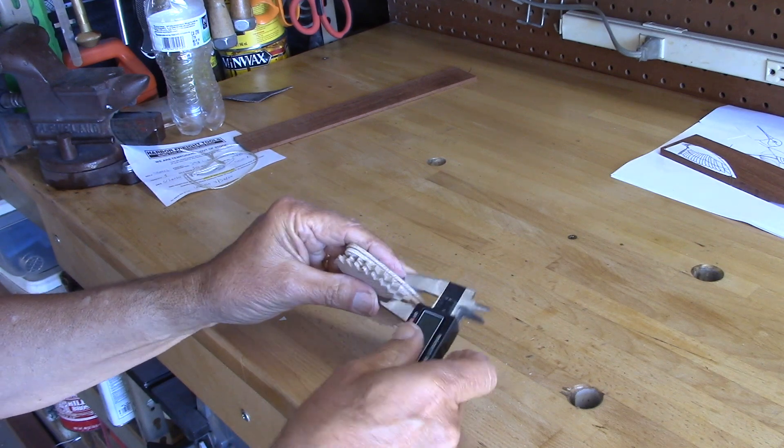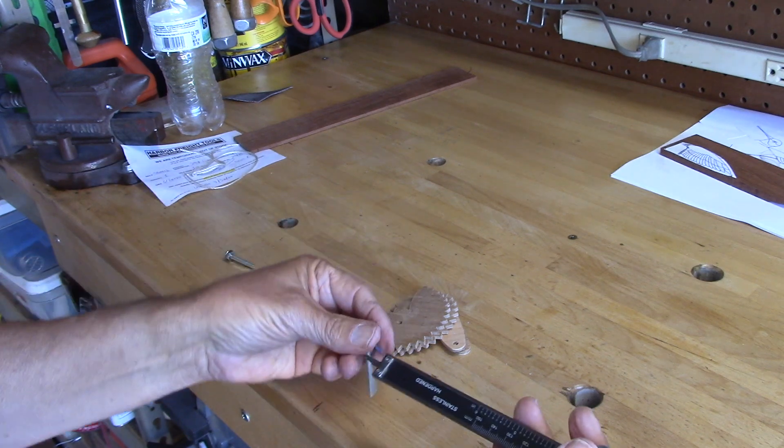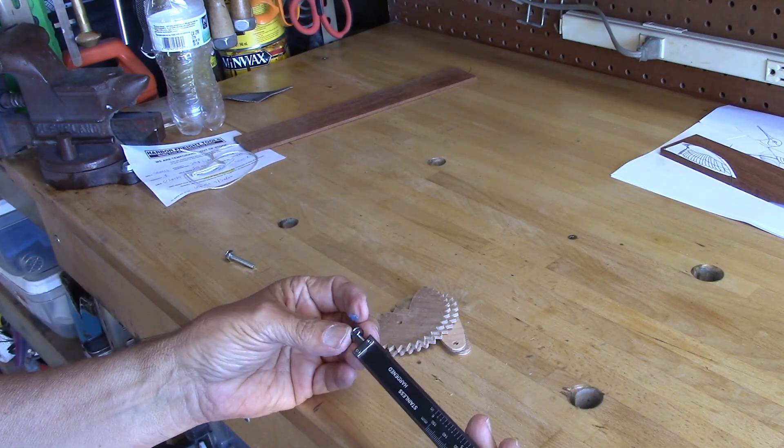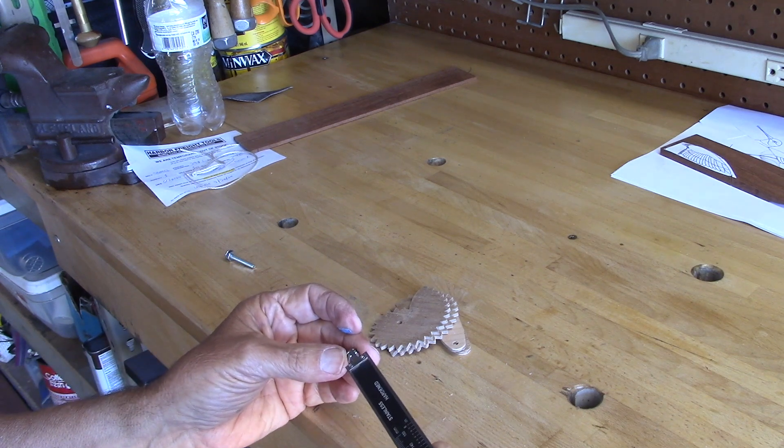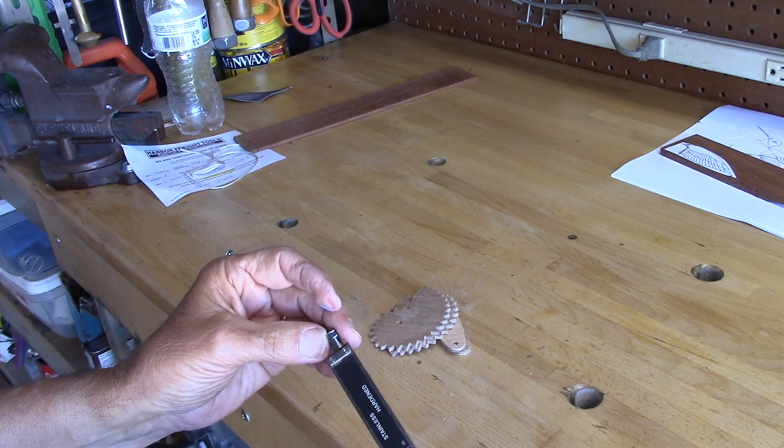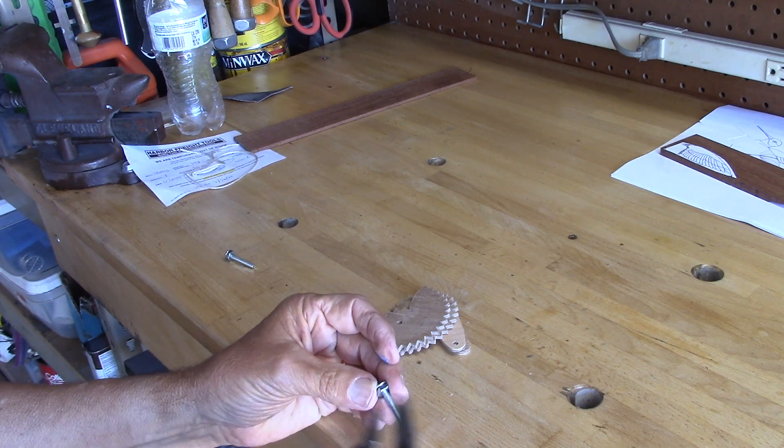Here I'm measuring the thickness of all the pieces of wood and when I lock that in I can say okay that's how much I need to be flush so I'm going to give myself a little bit more when I cut these bolts for the nuts to fit.